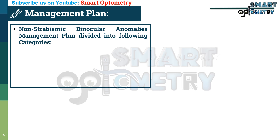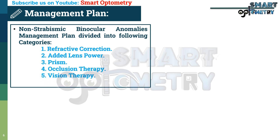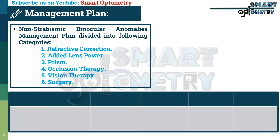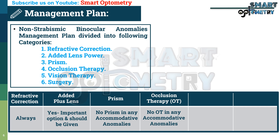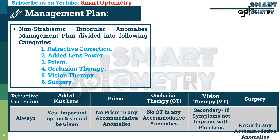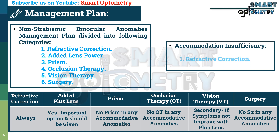Now let's see the management plan for accommodation insufficiency. Non-strabismic binocular anomaly management is divided into: refractive correction, added lens power, prism, occlusion therapy, vision therapy, and surgery. For accommodation insufficiency: refractive correction — always give it; added plus lens — yes, important; prism — no, not given in any accommodative anomaly; occlusion therapy — no; vision therapy — secondary, if symptoms don't improve with plus lens; surgery — no. Overall, management includes refractive correction, added plus lens, and vision therapy.